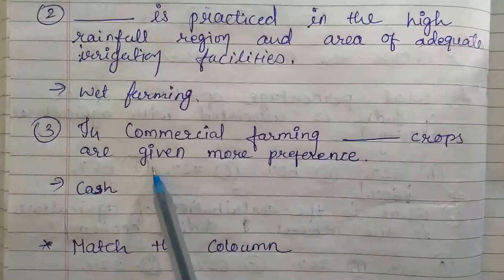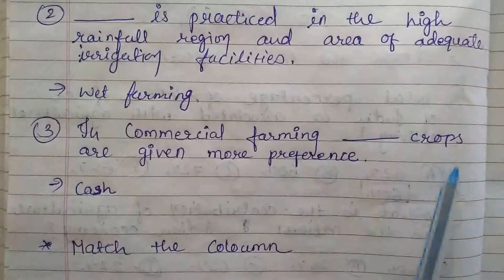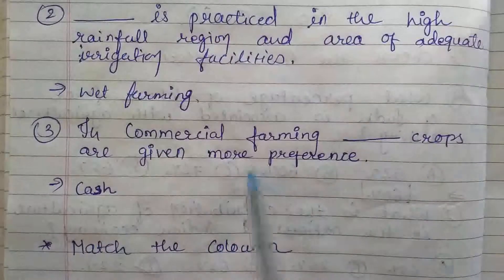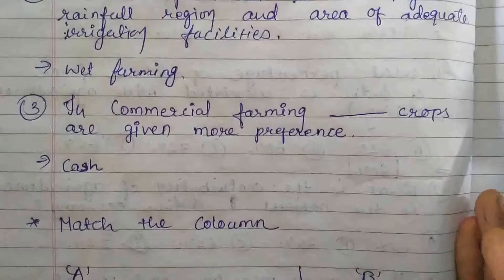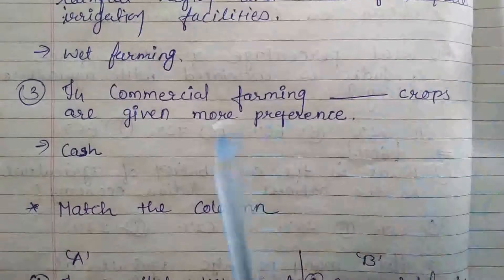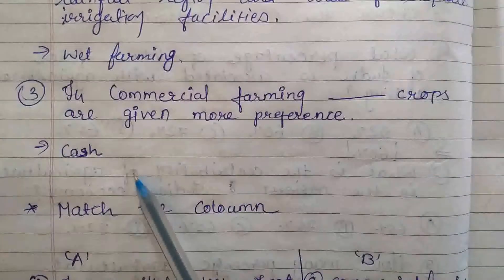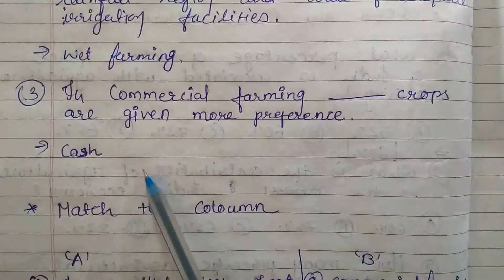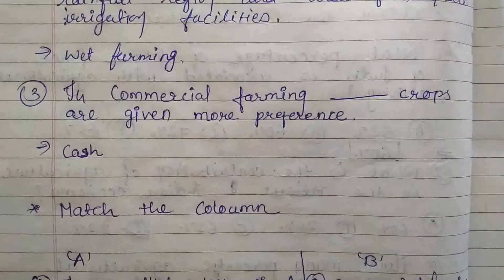Next blank: in commercial farming, DAS crops are given more preference. Kis tarah ki crops ko commercial farming mein zyada preference kiya jaata hai — that is cash crops, because it earns fast, and the profit margin should be high.